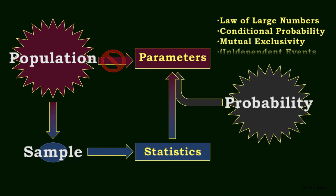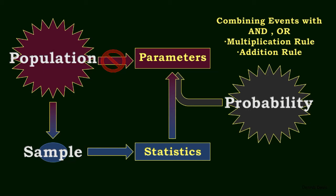Probability also encompasses the law of large numbers, conditional probability, mutual exclusivity, and dependent and independent events. Also, combining events with AND or OR, which correspond to the multiplication and addition rules of probability, respectively.